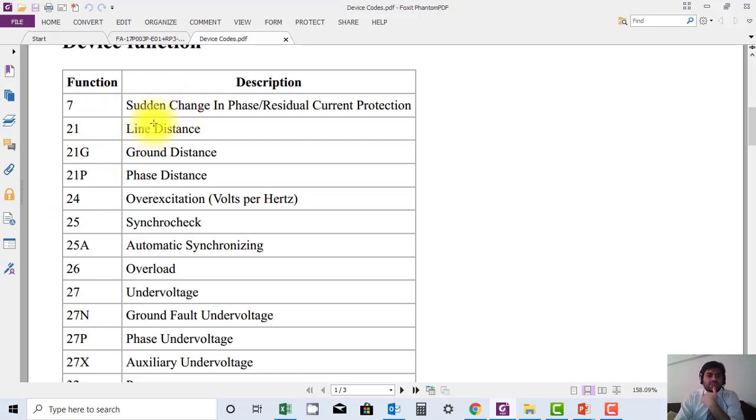For example, code 7 is sudden change in phase of residual current protection. Code 21, which is mostly used in control and protection drawings of substations, is line distance relay. Code 21G is used for ground distance, 21P is used for phase distance, 24 is used for over excitation, 25 is used for synchro check.